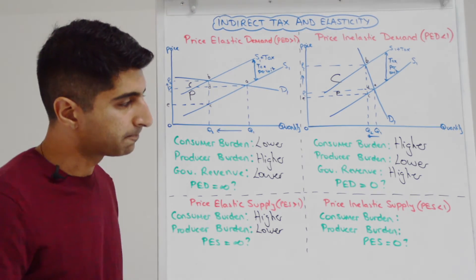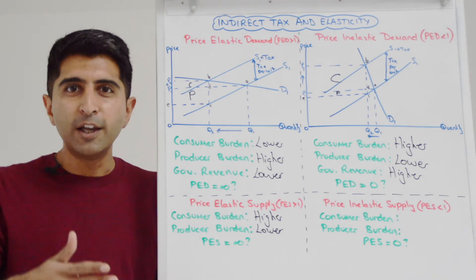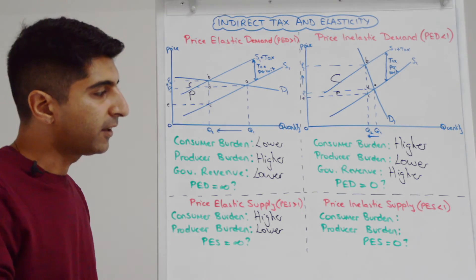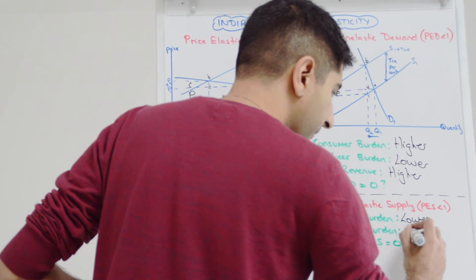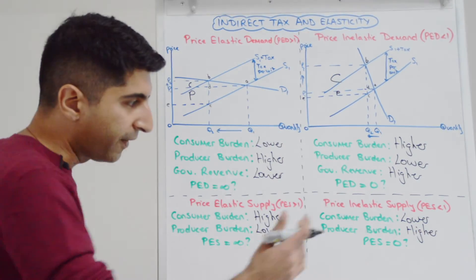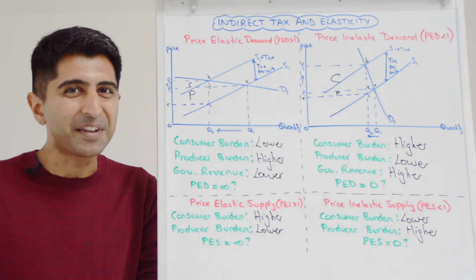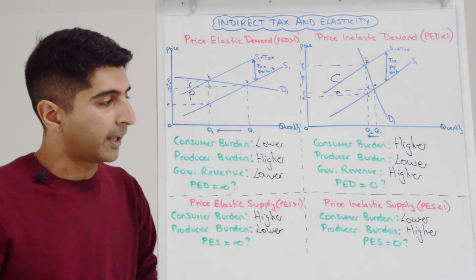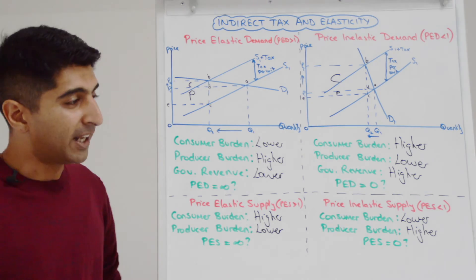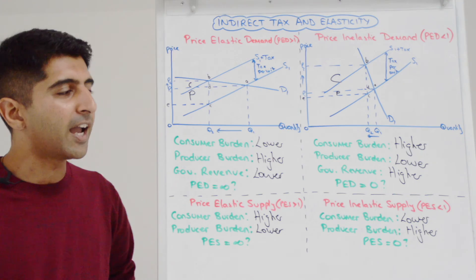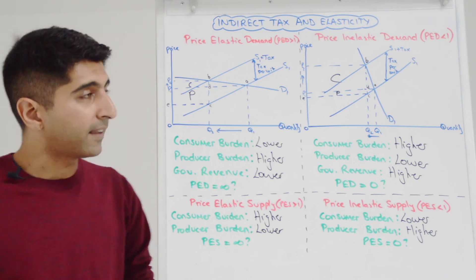For price inelastic supply, draw a steep supply curve with a normal demand curve. When you shift that supply curve upwards, the consumer burden is lower and the producer burden is much higher. And if supply is perfectly price inelastic, the supply curve is completely vertical and cannot shift upwards — so there is no change in equilibrium, consumers pay no higher price, and producers take on the entire burden of the indirect tax.